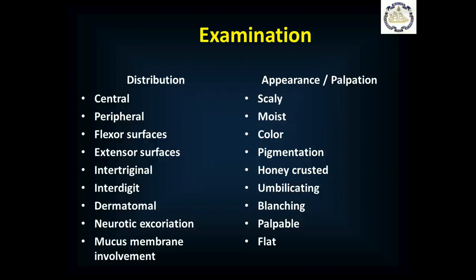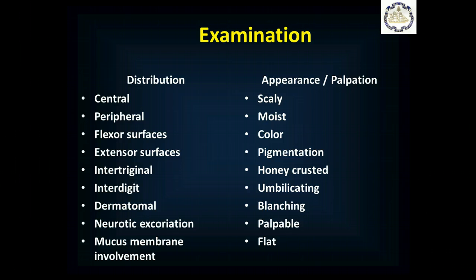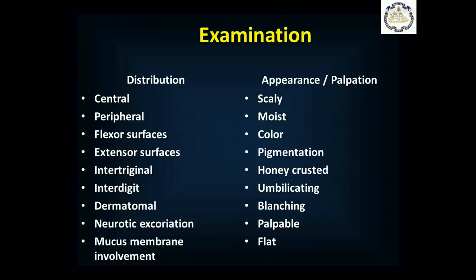In terms of the appearance: is it scaly, covered with little flakes? Is it moist or dry? What color is it? Is it pigmented like a freckle or does it look like their underlying base skin color? Does it look like honeycomb crusting across the top of it? Is it a firm raised mass with a little hole in the center — what's called umbilicating? Does it blanch? That is, if you have a red lesion and you push it, does it turn pale, and when you let go, does it turn red again?